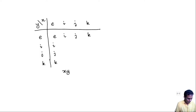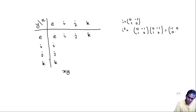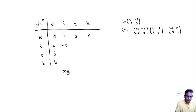What about I×I? I is the matrix [0, -1; 1, 0], so I×I = [0,-1;1,0]×[0,-1;1,0], which by matrix multiplication turns out to be -E. You can also easily check that J×J = -E and K×K = -E.